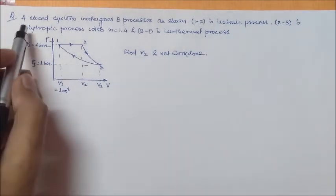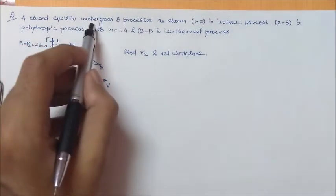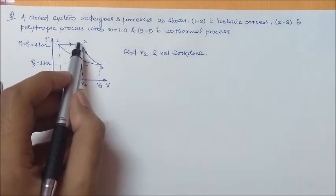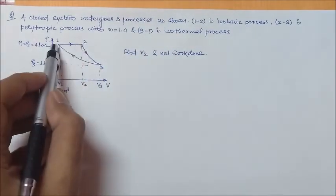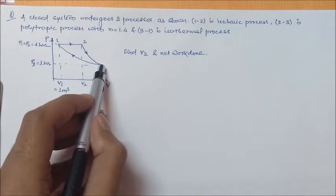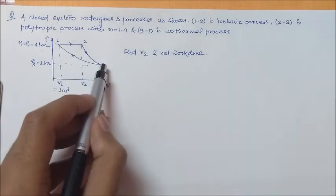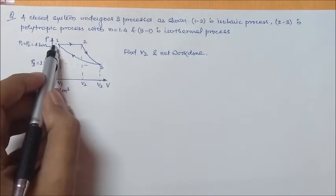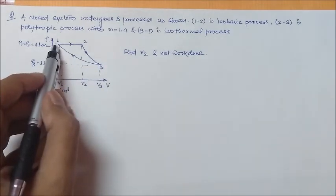The question is: a closed system undergoes three processes as shown. 1 to 2 is an isobaric process, that is the constant pressure process. 2 to 3 is a polytropic process with a polytropic index of 1.4. Then the system goes through 3 to 1 which is an isothermal process.